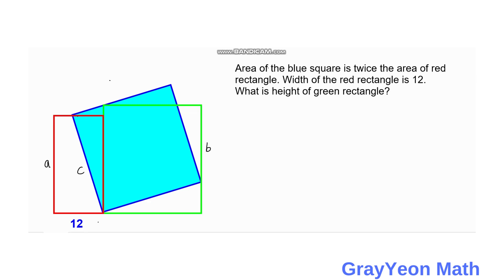Next, we use the fact that the given shapes are squares and rectangles, so we place a 90-degree angle at the corner of the green rectangle, at the corner of the red rectangle, and also at the corner of the blue square.